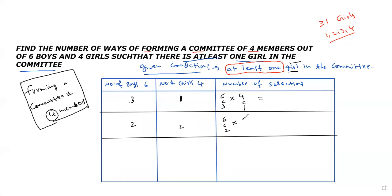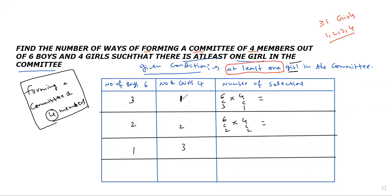For two girls: 6C2 into 4C2. Next, take three girls: total committee four, three girls selected, then the remaining one from boys, so write 6C1 into 4C3. Last case, four girls: all four from girls, boys selected is zero, so write 6C0 into 4C4. The number of girls gradually increases from one to the maximum four.